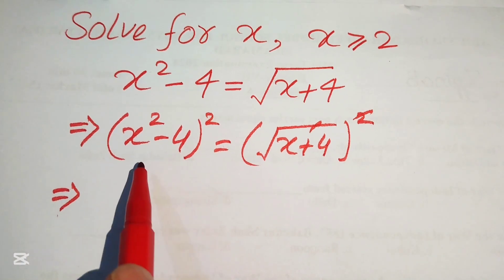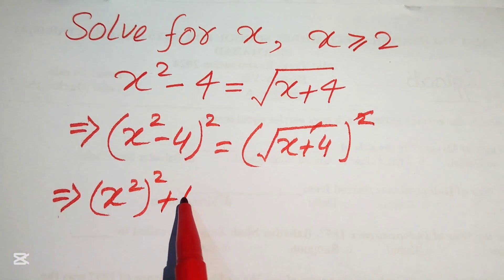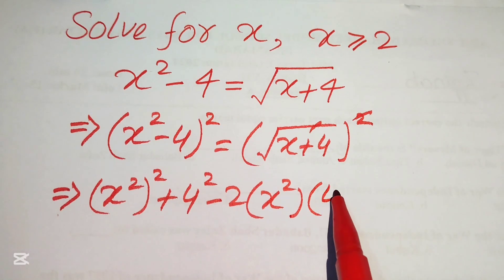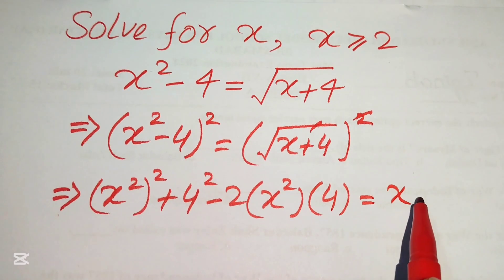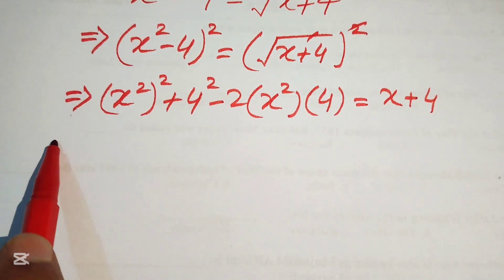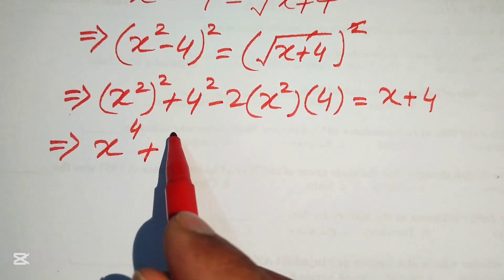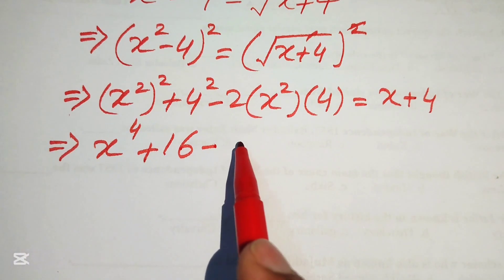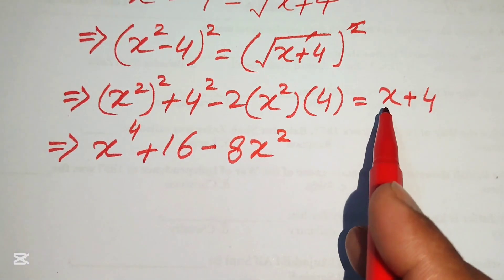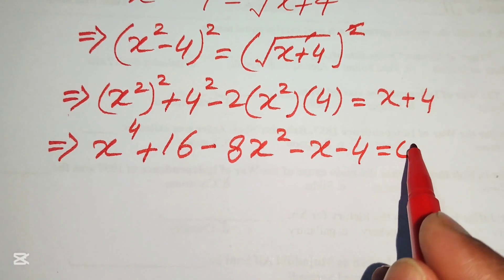According to this identity, we write the expression as x squared whole squared plus 4 squared minus 2 times x squared into 4, equals to x plus 4. Further, we write this as x to the power of 4 plus 16 minus 8x squared, and we move x plus 4 to the left hand side to get minus x minus 4 equals to 0.